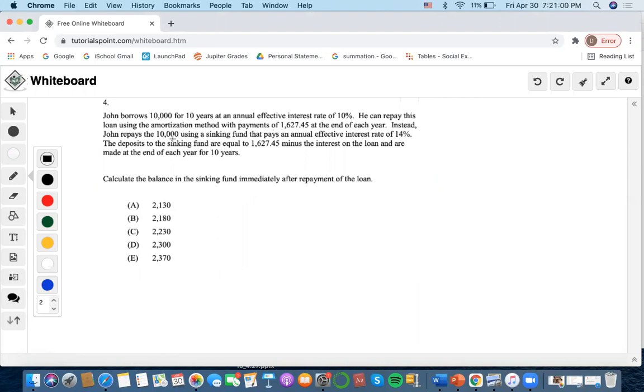Instead, John repays the $10,000 using a sinking fund that pays an annual effective interest rate of 14%. The deposits to the sinking fund are equal to $1,627.45 minus the interest on the loan and are made at the end of each year for 10 years.